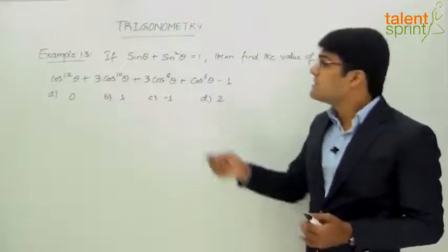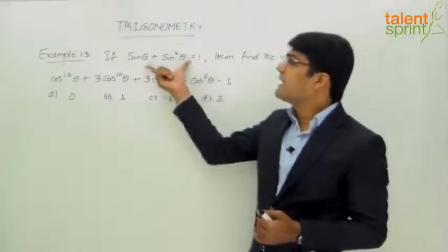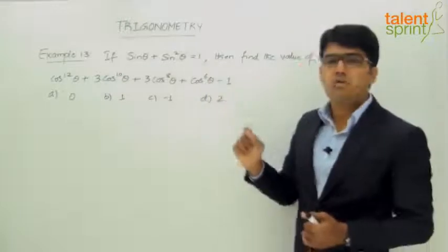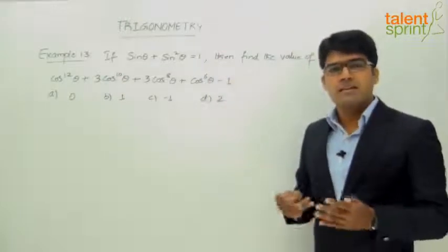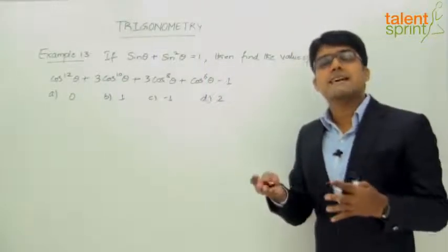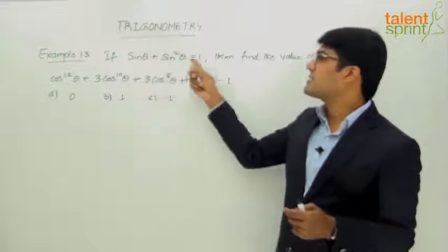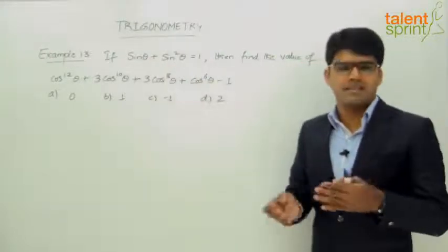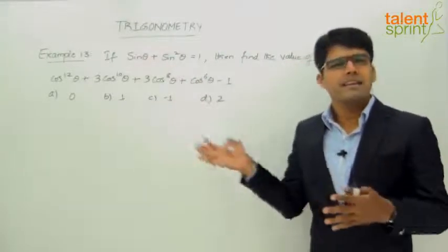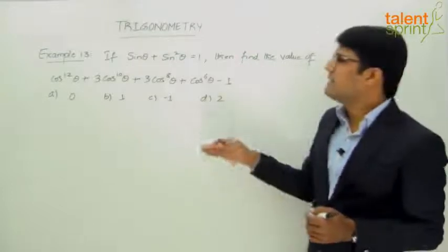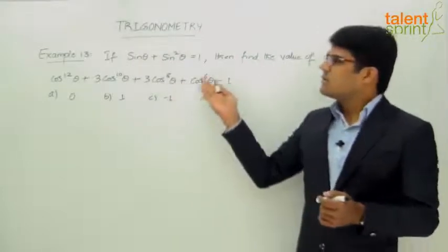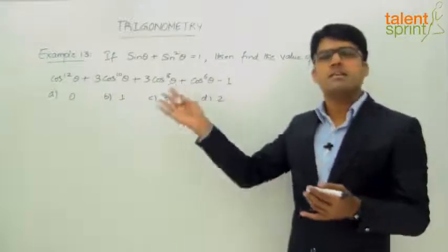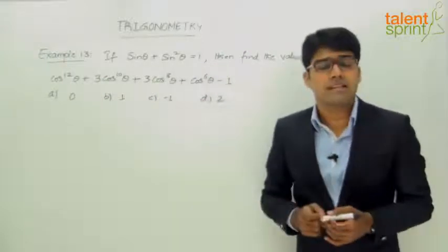What can be done? If you observe, this is like a quadratic equation: sin θ + sin²θ = 1. We can take sin θ as x, so this becomes x + x² = 1. We may be able to get the value of x which is sin θ by solving that quadratic equation, and then substitute cos θ accordingly to find the required answer.